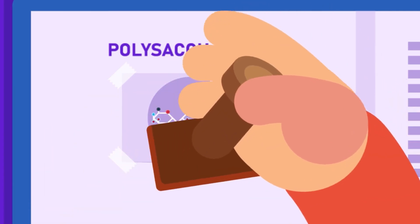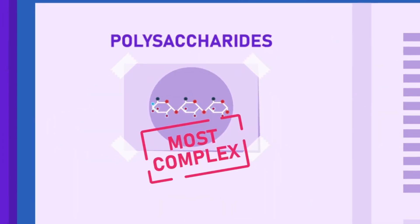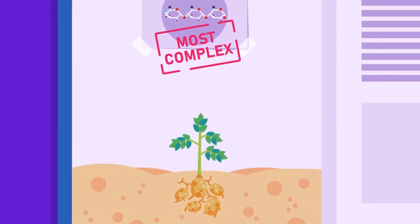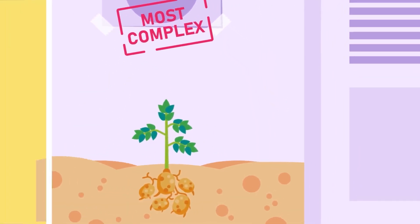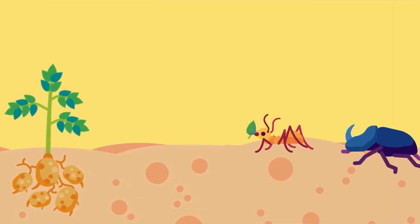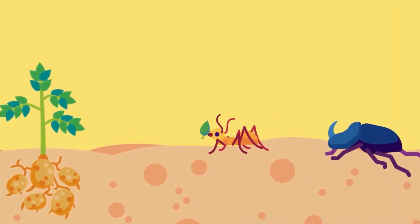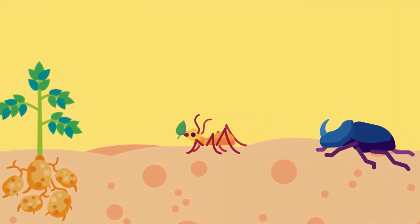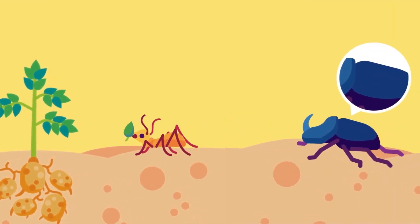Polysaccharides are the most chemically complex carbohydrates, and examples include starch and cellulose. There are other substances which are slightly modified carbohydrates, such as the chitin of the arthropod skeleton.